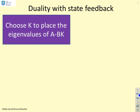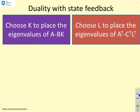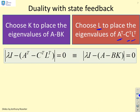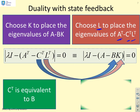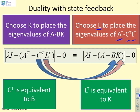So the duality with state feedback. With state feedback, we choose K to place the eigenvalues of A minus BK. With an observer, we could choose L to place the eigenvalues of A transposed minus C transposed L transposed. What's the key point? These two problems look very similar. The position of the B and the C transposed are the same. So C transposed has an equivalent role to B. Similarly, the position of the L transposed and the K are the same. So L transposed is equivalent to K. Solving these two problems is actually equivalent. They are dual problems. So whatever techniques you can come up with to solve for K, the same techniques can be used to solve for L transposed.